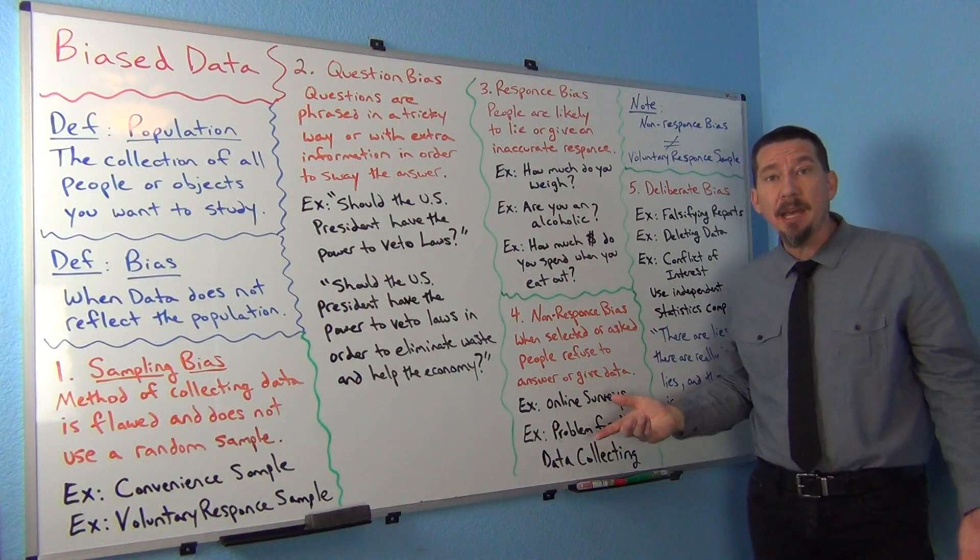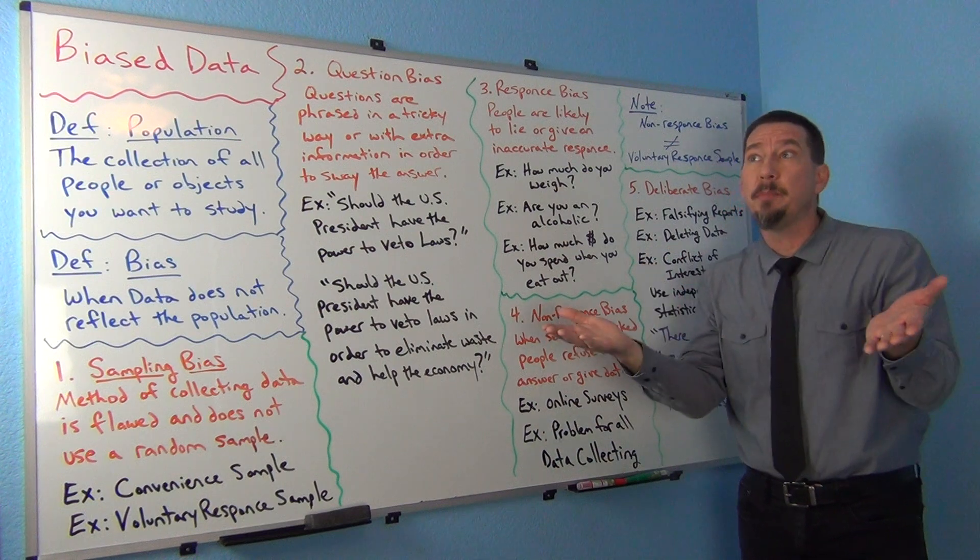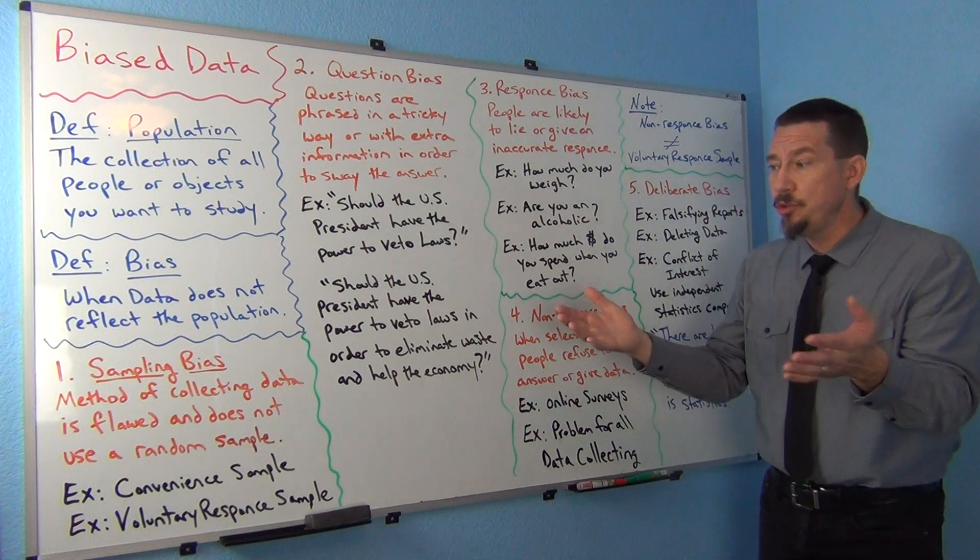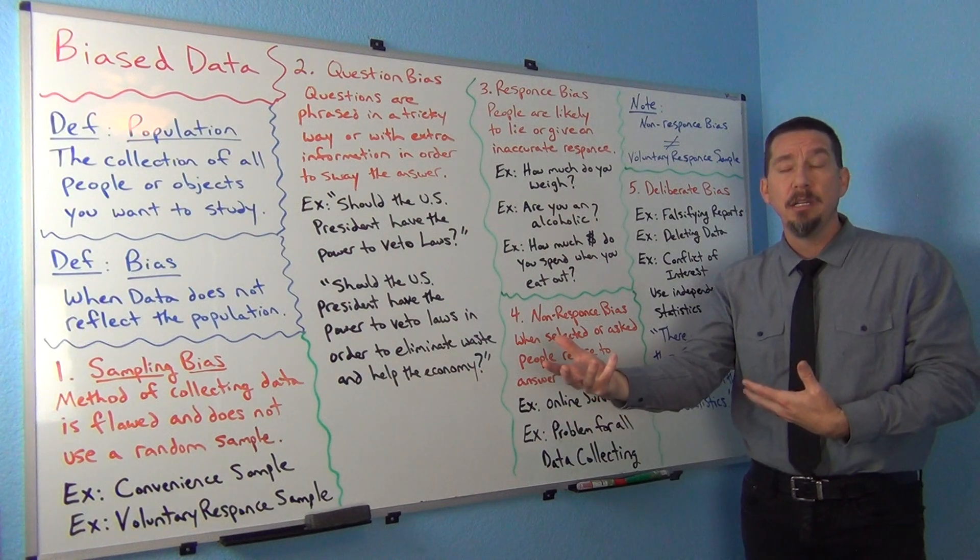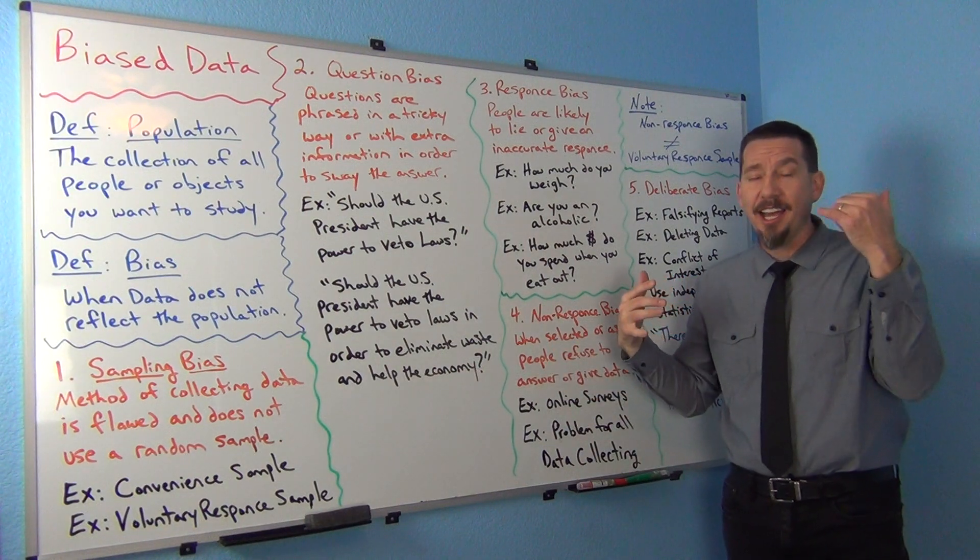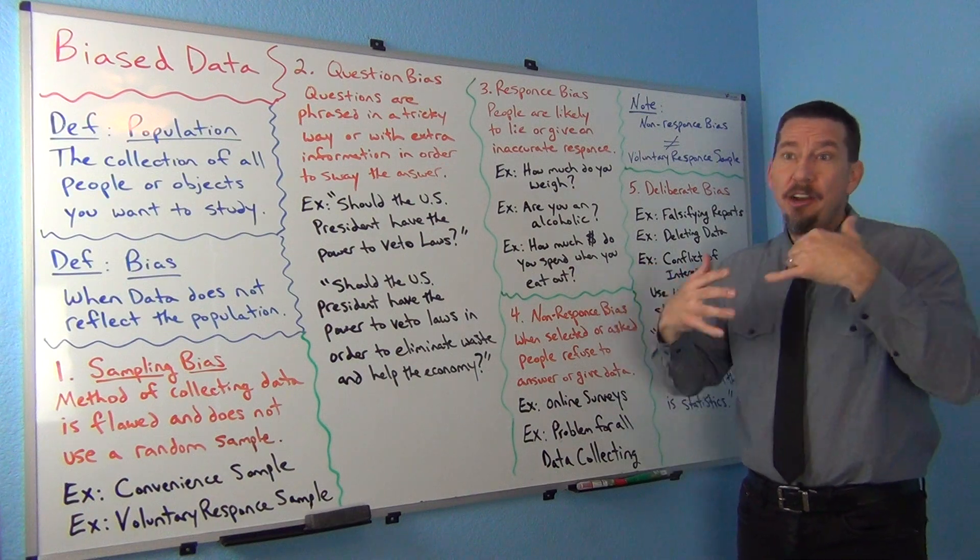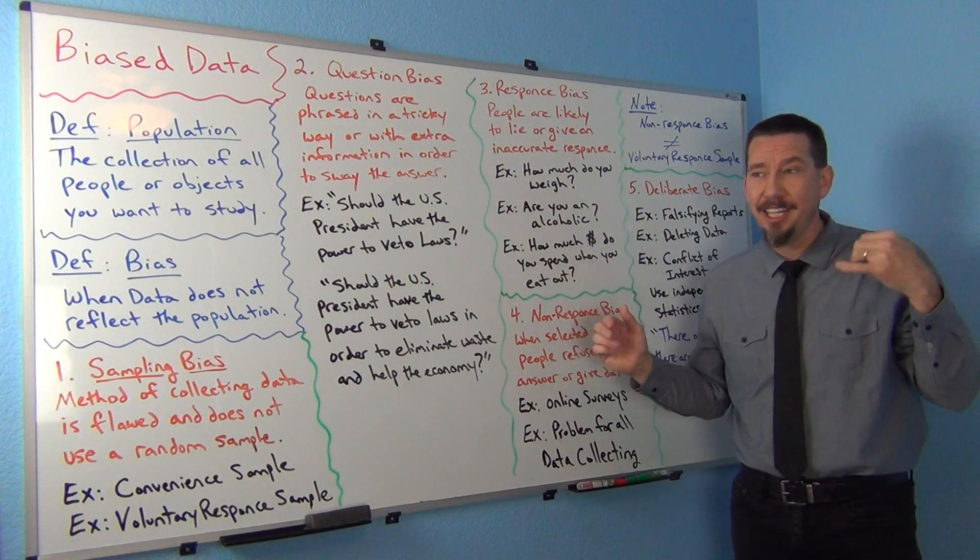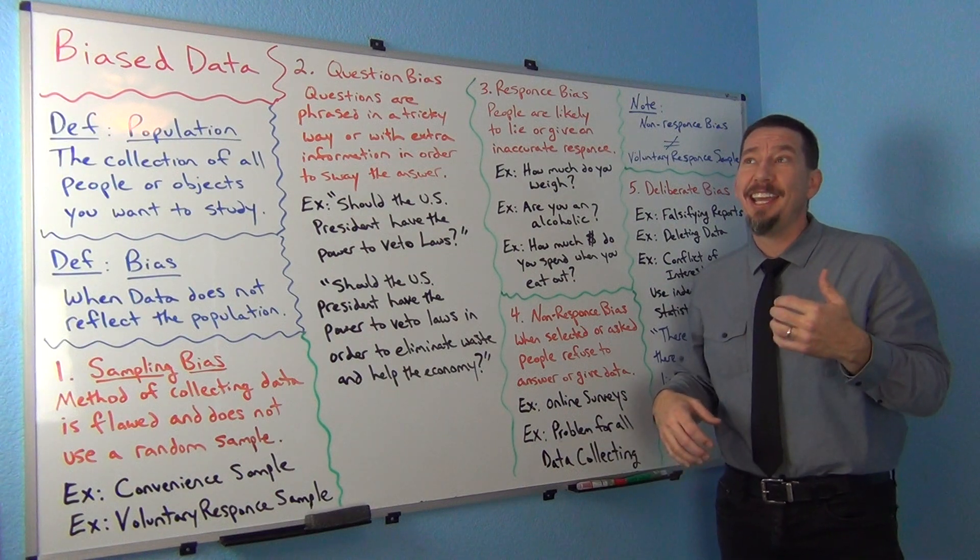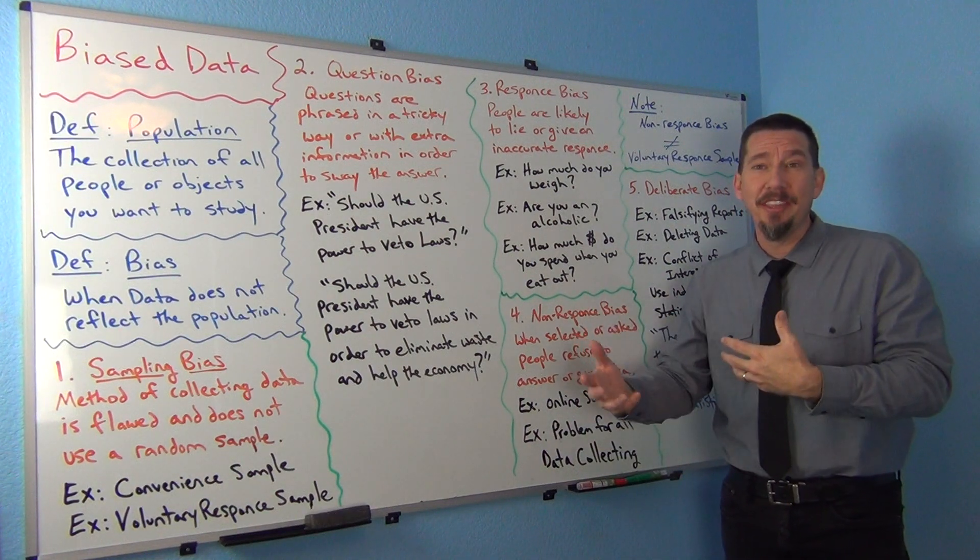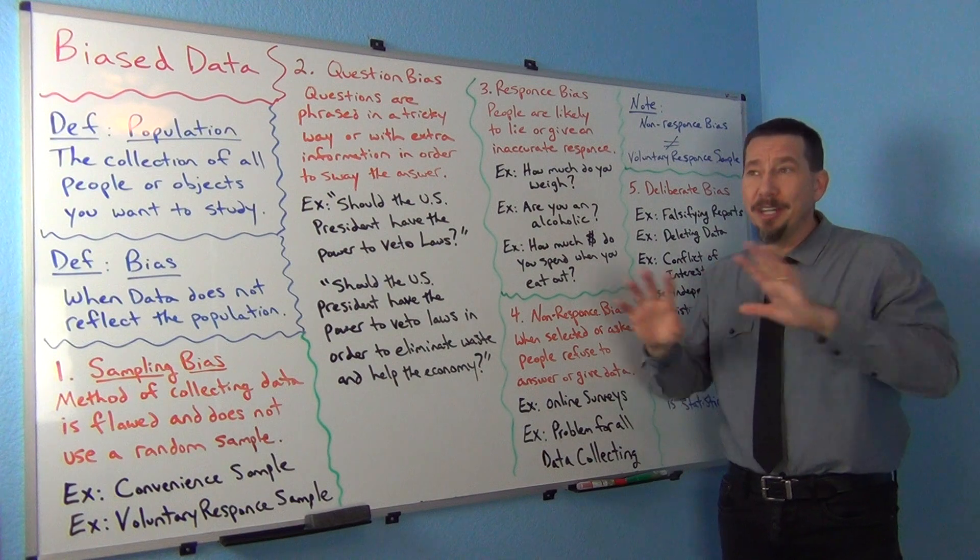If you can do a random sample, here's what a real random sample nowadays looks like. You have a computer randomly select a person from the population. You call them up and they don't answer. They don't want to talk to you. The computer picks another person and then you call them or try to get a hold of them. They don't want to talk to you. They don't want to give you data.